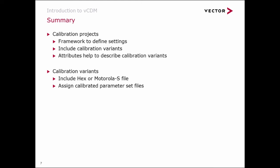The product attributes are used to describe the calibration variants more in detail. They can help you to filter and to search for your calibration variants.